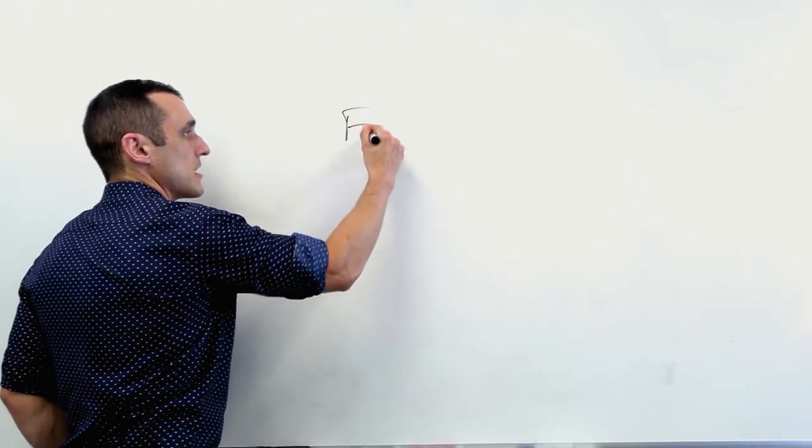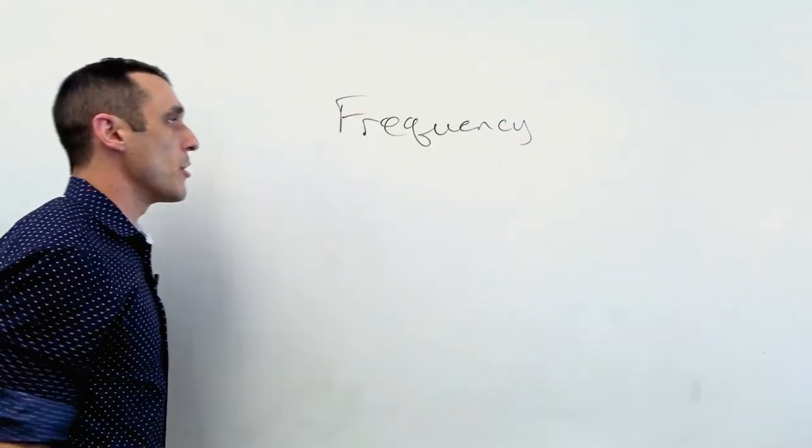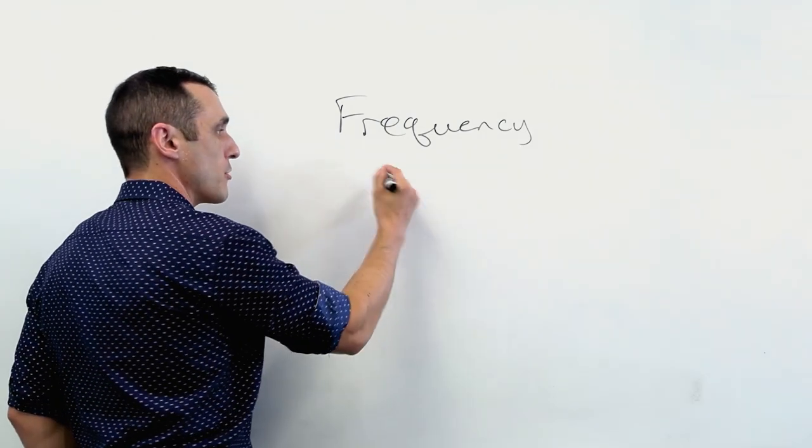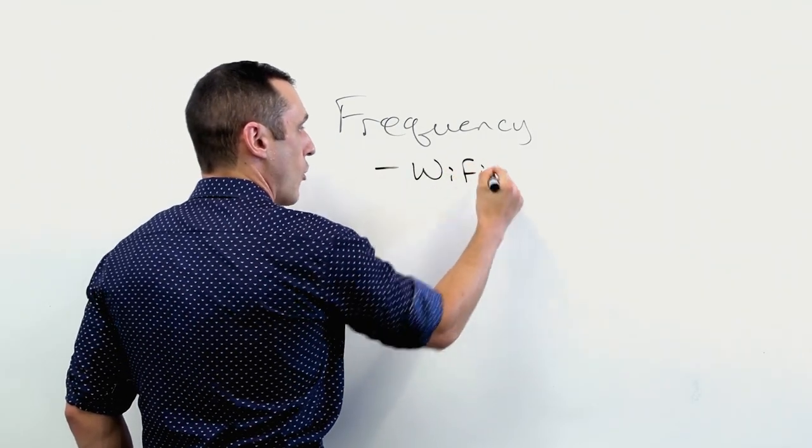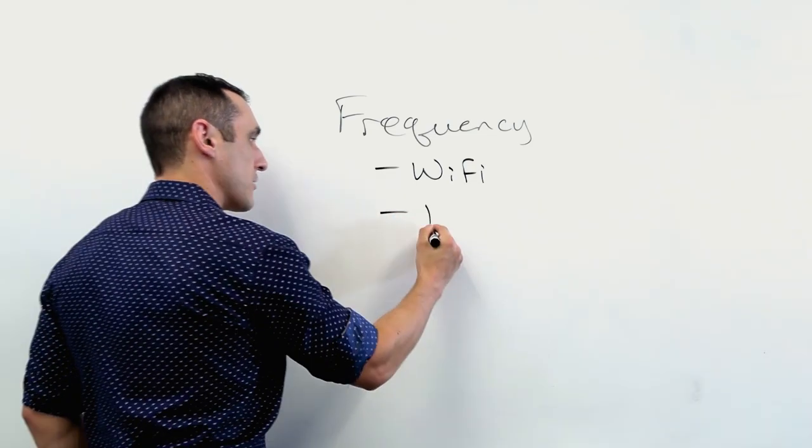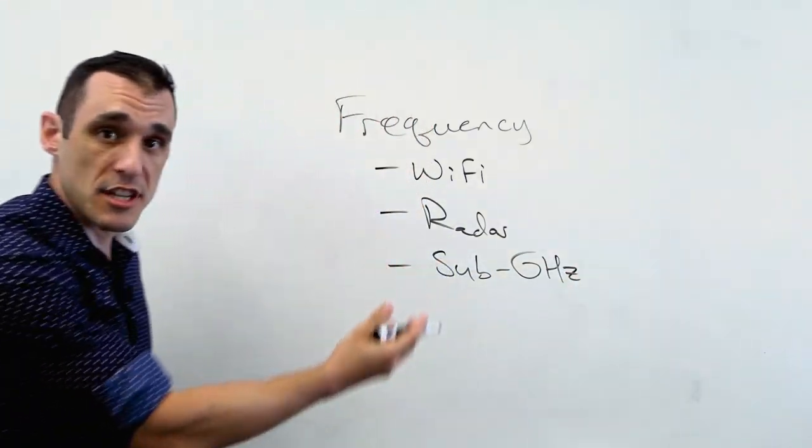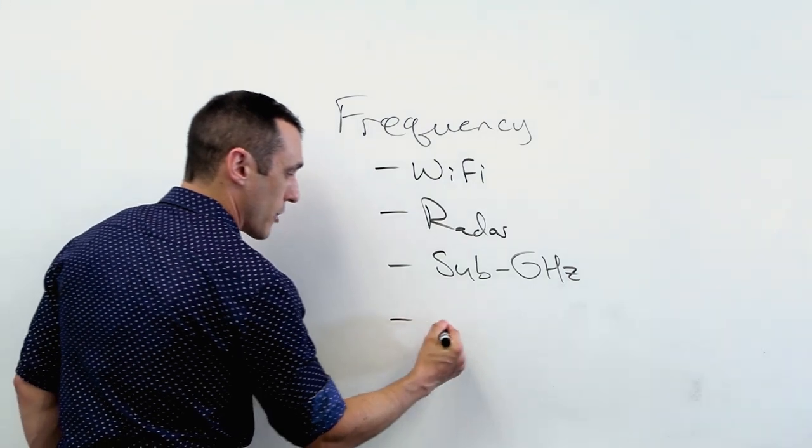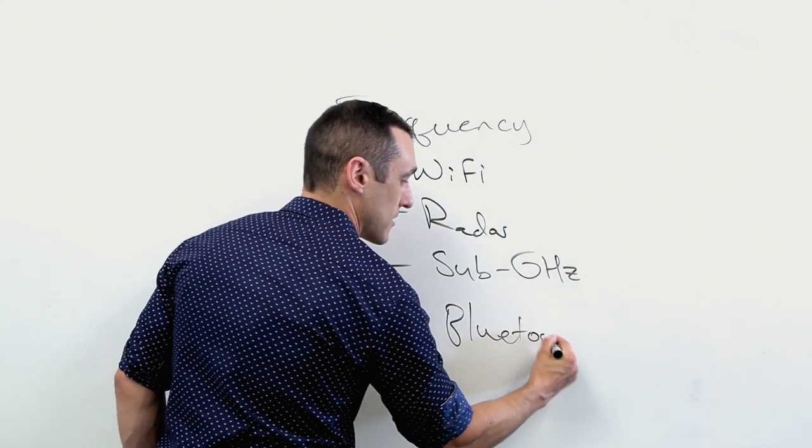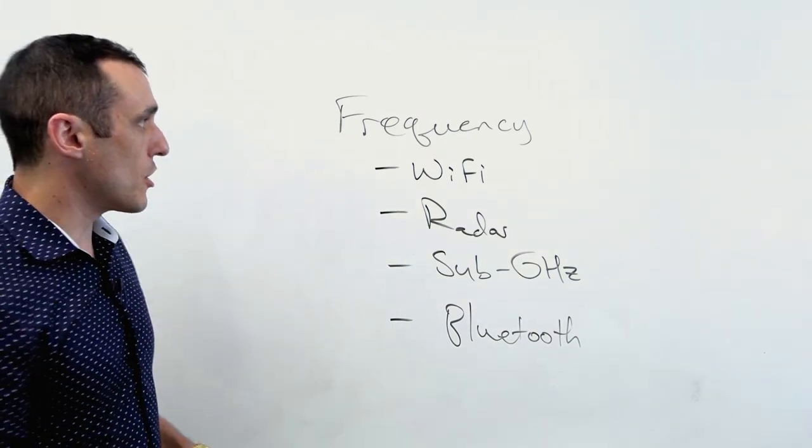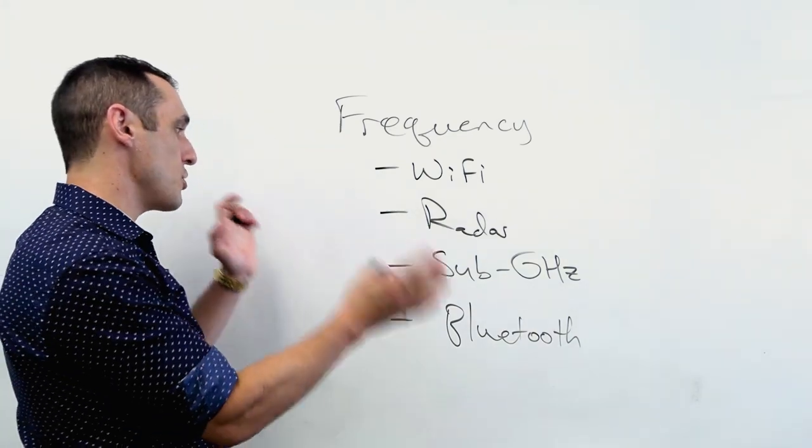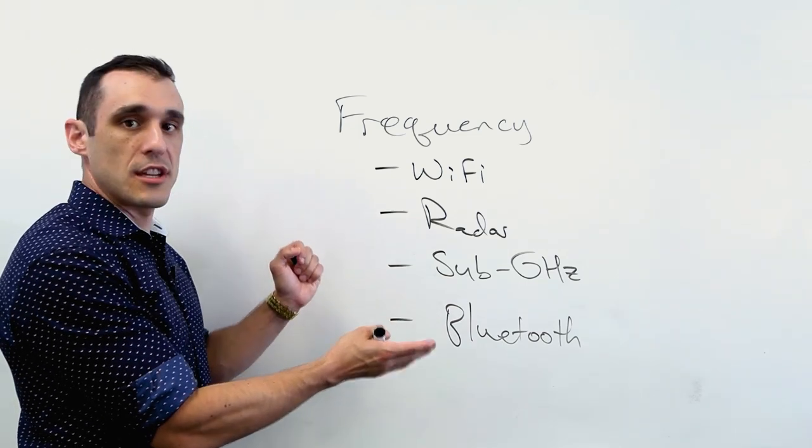As you get started with your RF design, there are a few things to think about on the front end to ensure the design is going to work properly. Number one, what frequency are you operating at? This is probably the most important because you might be operating with a protocol like Wi-Fi or maybe you're doing something like radar. Maybe you're operating at sub-gigahertz signals doing an IoT protocol, or maybe you're operating with Bluetooth either at 2.4 or 5 gigahertz. There are all sorts of different options and you need to consider which frequency you're going to be operating at.